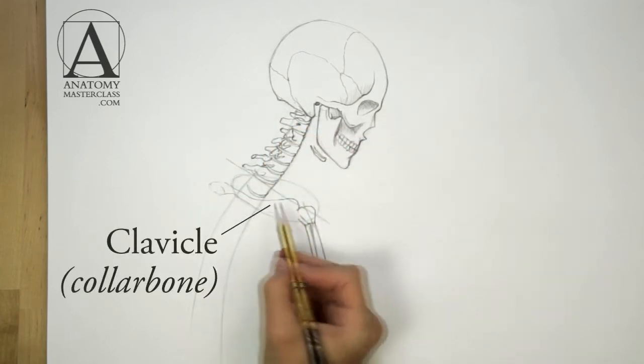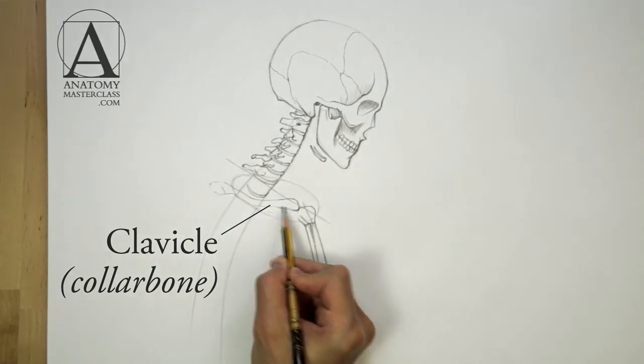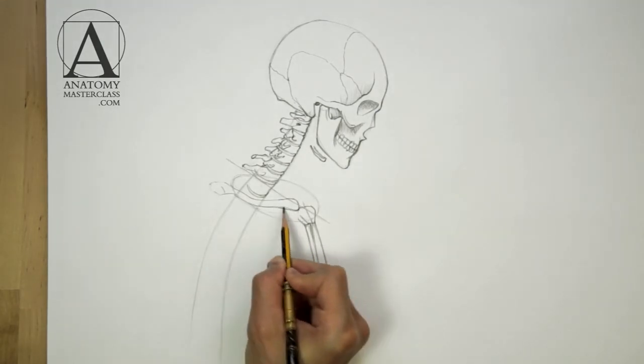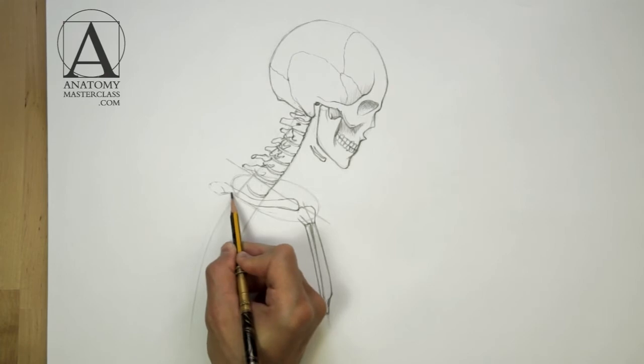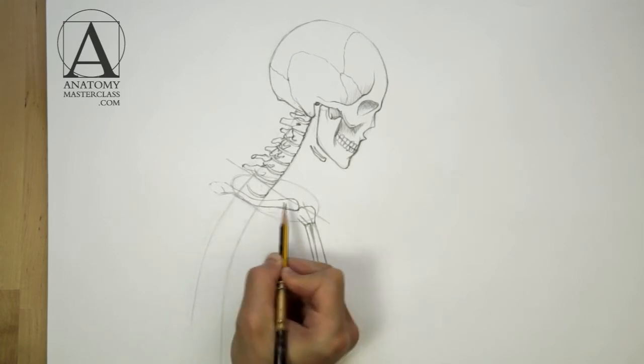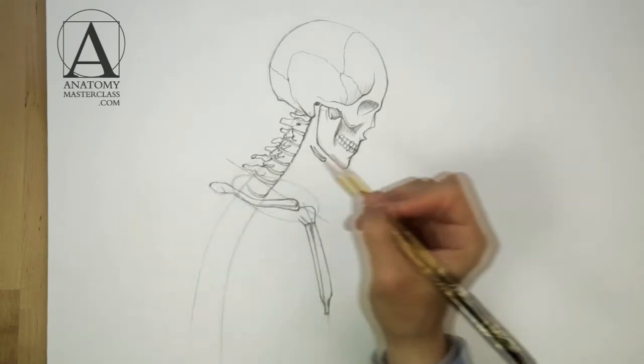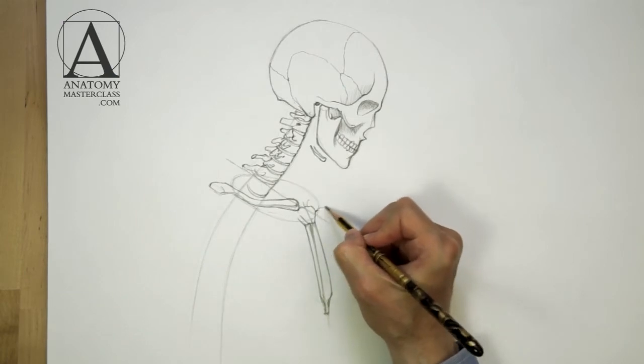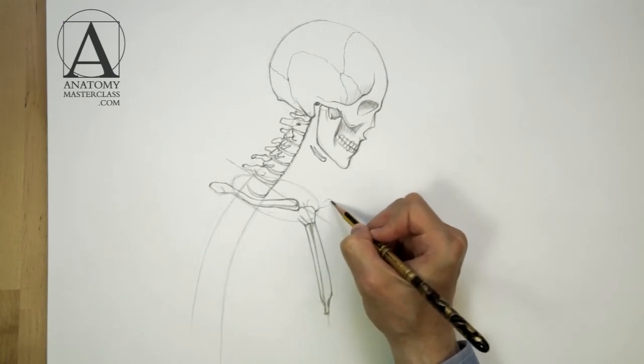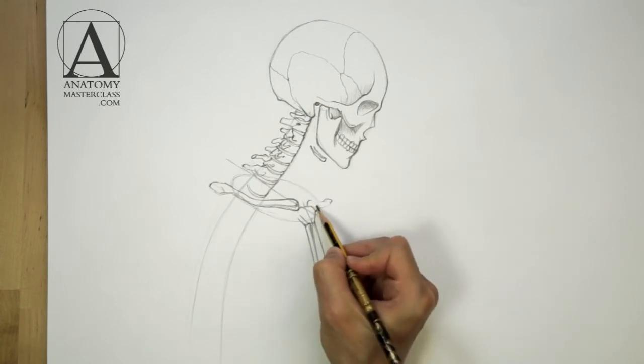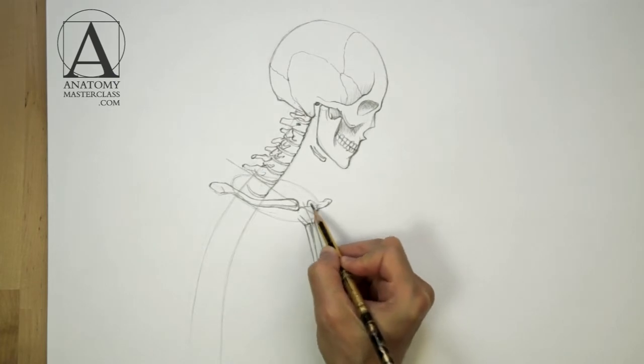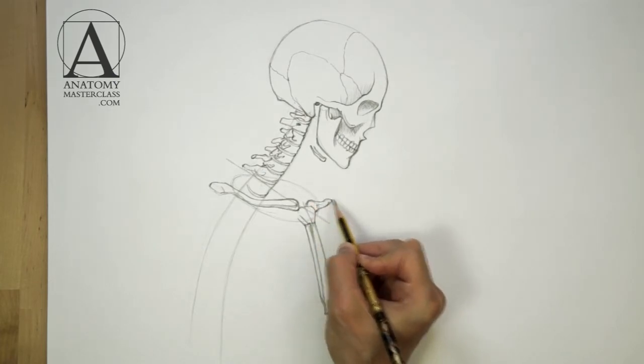Just above the first rib is the collarbone. Its inner side is also attached to the top of the breastbone. The collarbone is curved. The inner half goes along the rib and the outer half is bent to follow the shoulder axis. We see the second collarbone in perspective and therefore it is quite foreshortened.